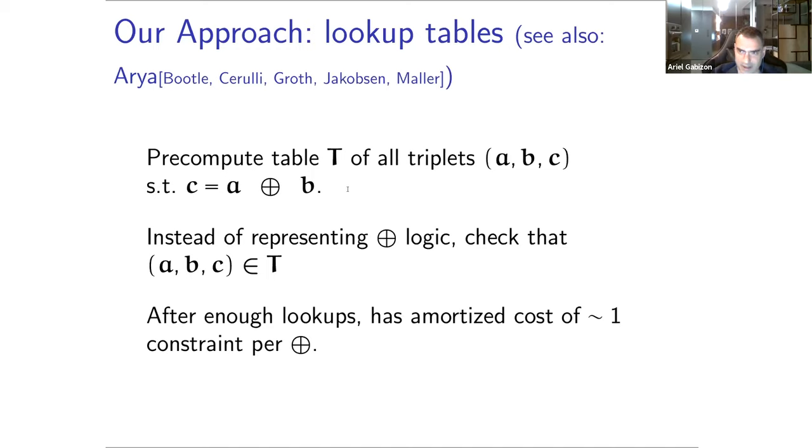Maybe you can somehow just check that this tuple A, B, C is in your precomputed table rather than expressing, actually expressing the XOR bitwise XOR logic in your big prime field. The idea is that you can do this in a way that when you do enough of these lookups, roughly the number of lookups should be as large as the table. That's when it starts to pay off. When you do enough, then these lookup checks have an amortized cost of one constraint per XOR instead of this 25 to 30.